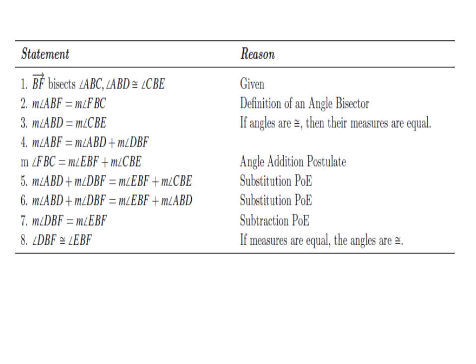Statement 2 is the definition of an angle bisector, so the measure of angle ABF is equal to the measure of angle FBC.